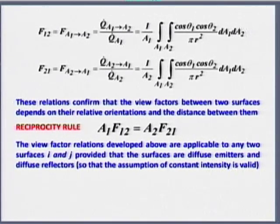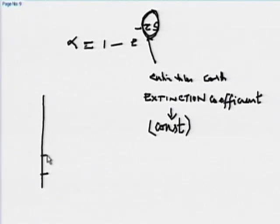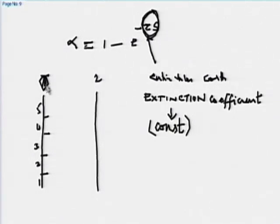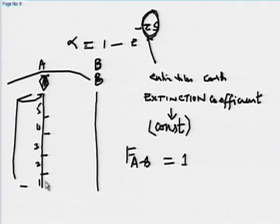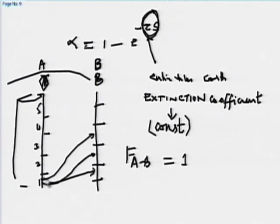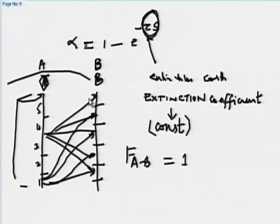The reciprocity rule A1·F12 = A2·F21 is widely used. For a plane surface, F11 = 0. For a convex surface, nothing comes back so F11 = 0. A concave surface or dish will have a non-zero view factor with itself. For one cylinder inside another, the inner surface to outer F = 1, but outer to inner F ≠ 1 because the outer surface sees part of itself.